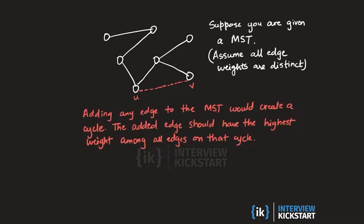Not only would adding any edge to the MST create a cycle, we can also say that the weight of that added edge must be larger than the weight of all the other edges which are part of the cycle. So if the weight of this edge between u and v is w, then w must be greater than w1, greater than w2, and greater than all other edges making up the cycle. Again, I'm assuming here that all the edge weights are distinct.